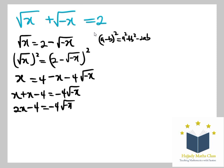Dividing by 2, I'm going to have x - 2 = -2√(-x).